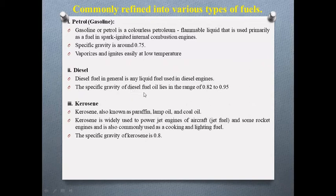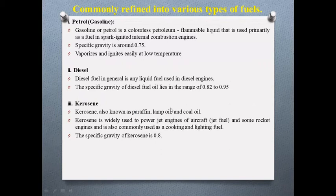Diesel engines have found broad use as a result of higher thermal efficiency and thus fuel efficiency. The specific gravity of diesel fuel is in the range of 0.82 to 0.95. Kerosene, also known as paraffin lamp oil and coal oil, is a combustible hydrocarbon liquid derived from petroleum. It is widely used as a fuel in industry and households, to power jet engines of aircraft as jet fuel, and in some rocket engines. It is also commonly used as a cooking and lighting fuel. The specific gravity of kerosene is 0.8.